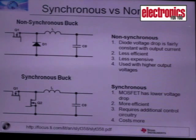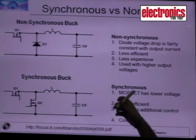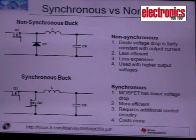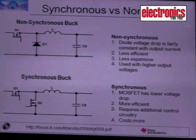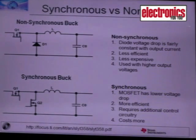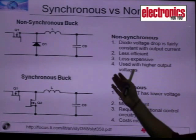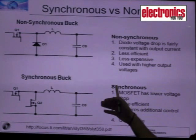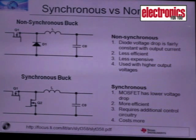The non-synchronous buck is generally used for high output voltages, where diode losses are not significant compared to the output power. For lower output voltages, a synchronous buck is used to achieve higher efficiency and lower losses.